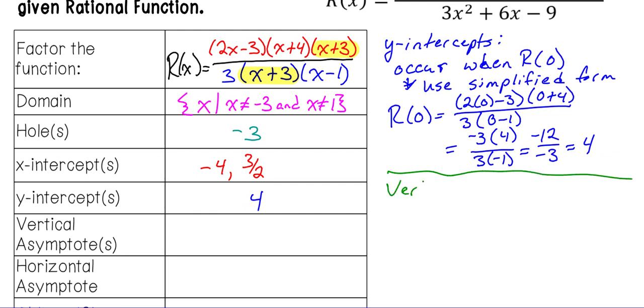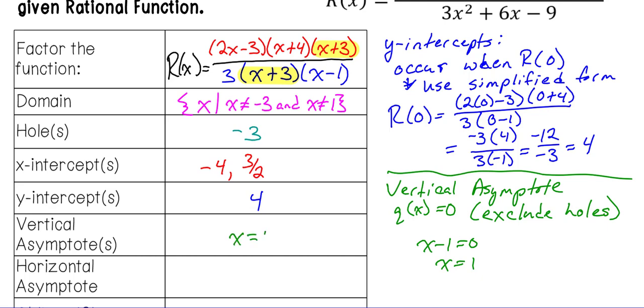To find our vertical asymptote, this is where we set the denominator, or the q of x, equal to 0. And we also want to exclude the holes. This is why it's good to find the holes first, the common factor on the numerator and the denominator. We don't need to worry about using it when we're looking for this information. So that means the only thing we care about is 3 set to 0 does not work. So we only care when x minus 1 equals 0. So our vertical asymptote, this is going to be an equation. So you want to type this as x equals 1 because the asymptote is a line.